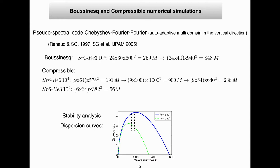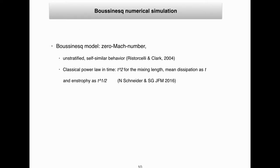We computed dispersion curves for two different Reynolds numbers, and we see the difference in stability. When you increase the Reynolds number, we increase the number of unstable modes. However, the stratification does not strongly influence the dispersion curve — stability does not depend strongly on stratification. The dashed line represents the initial condition for the free simulations.